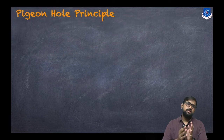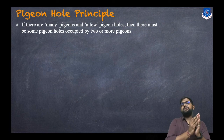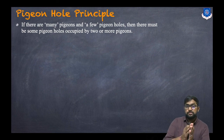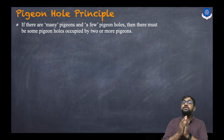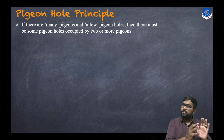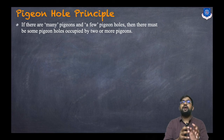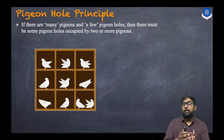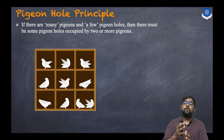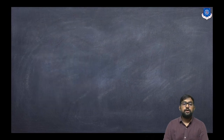First, let us understand the famous pigeonhole principle. It says that if there are many pigeons and few pigeonholes, then there must be some pigeonholes occupied by two or more pigeons. In this image we have ten pigeons and nine pigeonholes, so there is at least one hole in which two pigeons must be placed.